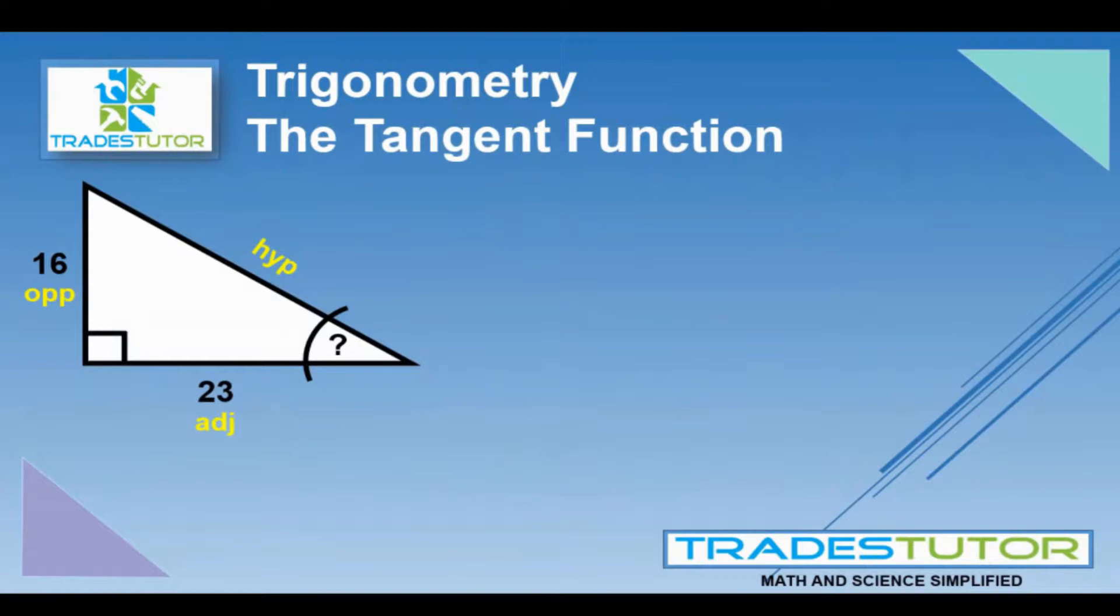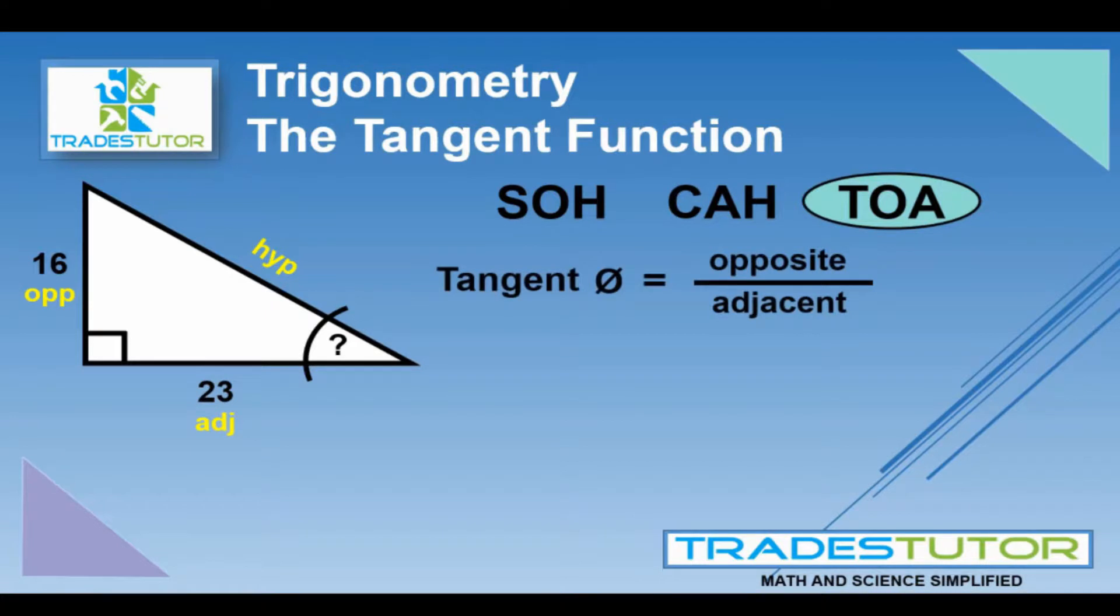If we were to go to our SOHCAHTOA or our trigonometry functions, we'll be dealing with the T, the O, and the A, or the TOA, and that is the tangent function. And that signifies a relationship between the opposite and the adjacent.